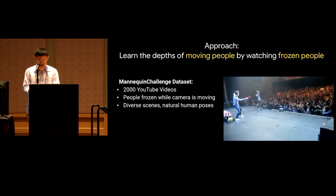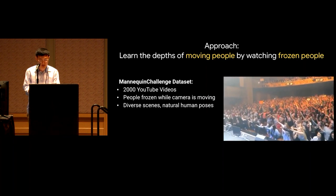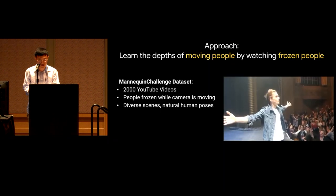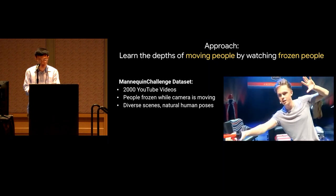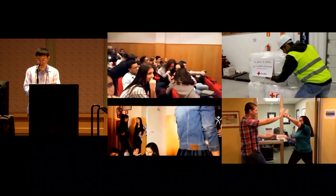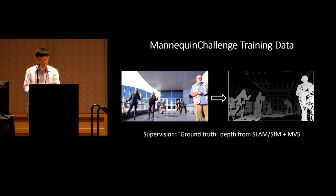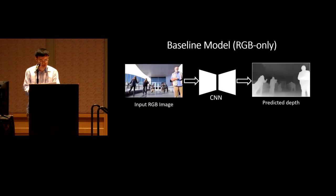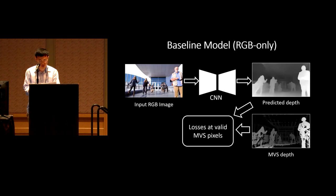We use a data-driven approach and create the Mannequin Challenge dataset, containing thousands of YouTube videos of people imitating mannequins — freezing in natural poses while a handheld camera moves through the scene. The dataset spans varied scenes, poses, and numbers of people. Because people are stationary, we use structure-from-motion and multi-view stereo to recover camera poses and depths, which serve as ground-truth supervision for training a neural net.